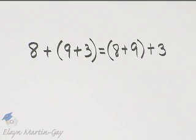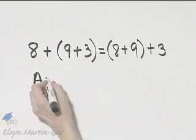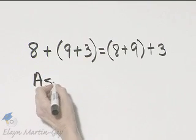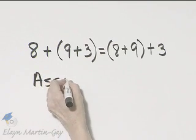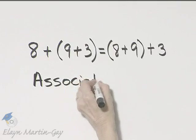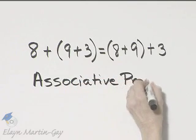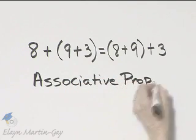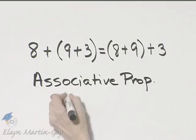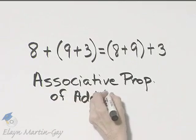What has to do with grouping would be the associative property. So this is true by the associative property — and this happens to be the associative property of addition, since we're working with addition.